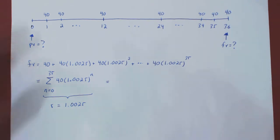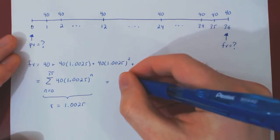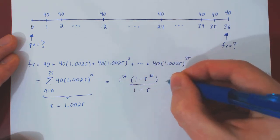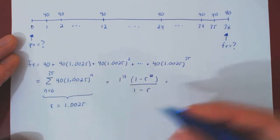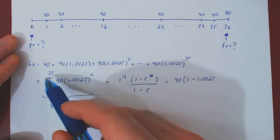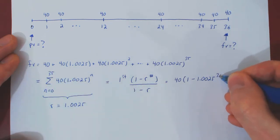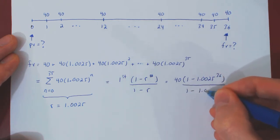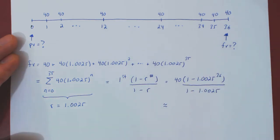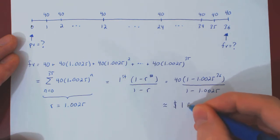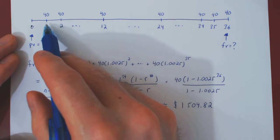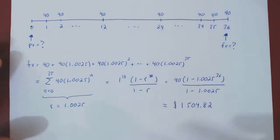We can evaluate this finite geometric series efficiently with the summation formula: first term times (1 minus r to the number of terms), over (1 minus r). The first term when n equals 0 is simply 40. There are 36 terms. Evaluating this with a calculator gives approximately $1,504.82. So that is the final value of our 36 investments of $40 at the end of each month, therefore after 3 years.